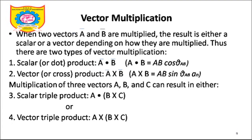We will see vector multiplication. This is an unavoidable part of vector calculus where you need to have a multiplication between two vectors. It can be a dot product, it can be a cross product, it can be a scalar triple product or vector triple product. But more often we are going to use these two: scalar product and vector product.